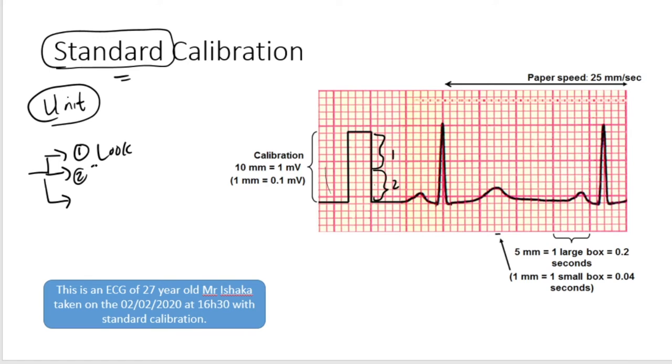If you see one, two, three, four, five, so up to here is one big box, then one, two, three, four, five up to there is the second big box, and so that shows me that it's standard calibrated. Another way you can establish is by looking at the speed of the ECG. The moment you see 25 millimeters per second, this ladies and gentlemen is standard calibration.